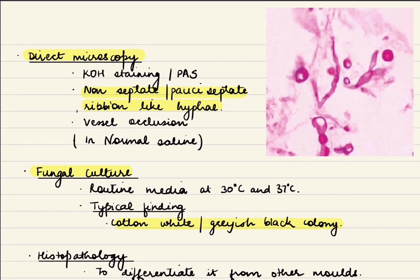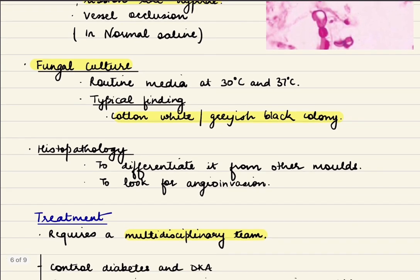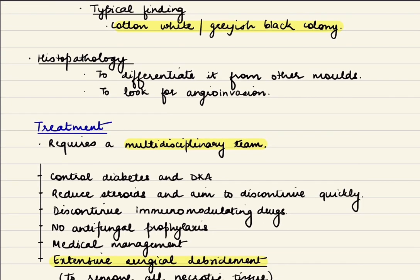Coming to microscopy, we can do potassium hydroxide staining and it can also be stained with periodic acid-Schiff. This mucor is non-septate or pauci-septate and has ribbon-like broad hyphae with vessel occlusion. Important: direct microscopy swabs must be sent in normal saline. Similarly, fungal culture is sent in normal saline, cultured in routine media at 30 and 37 degrees Celsius with typical findings of cotton white or grayish-black colonies. Histopathology is done to differentiate it from other molds, and we have to look for angio-invasion.